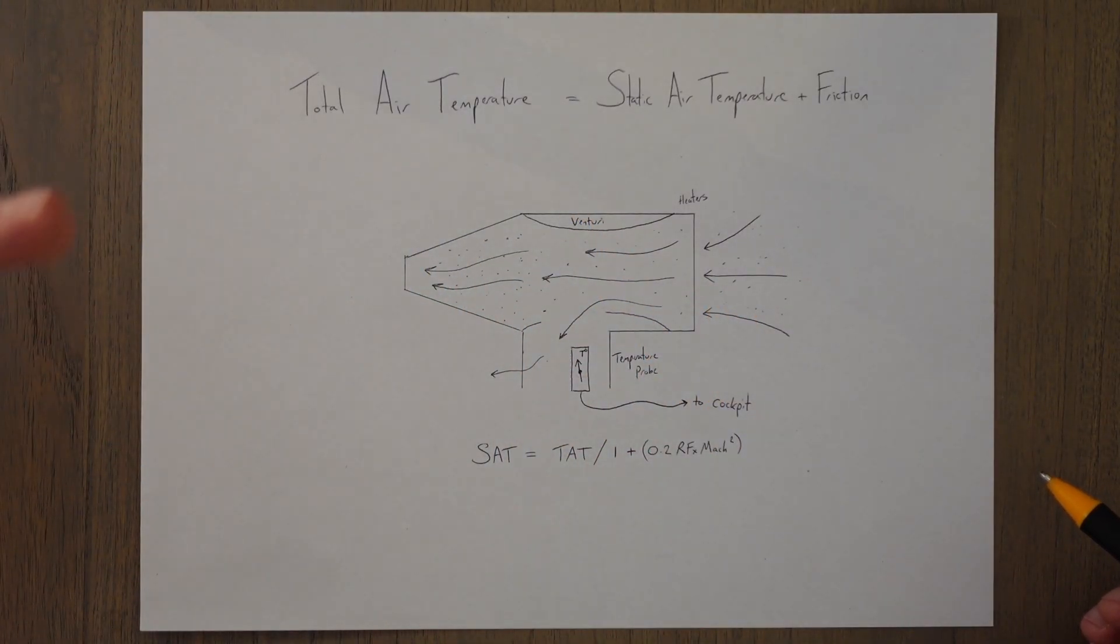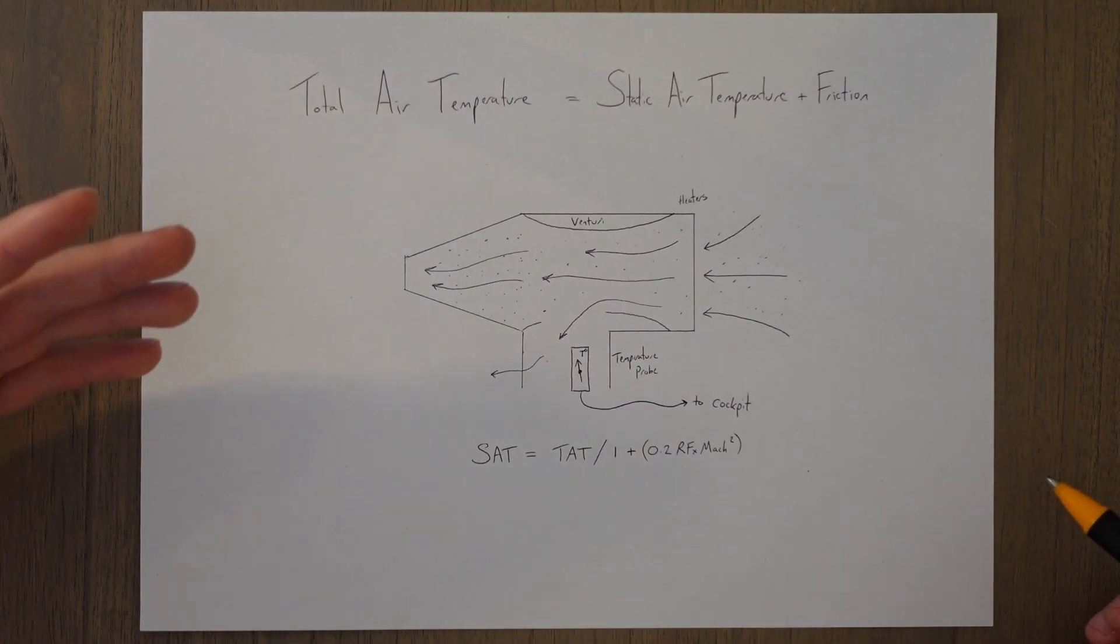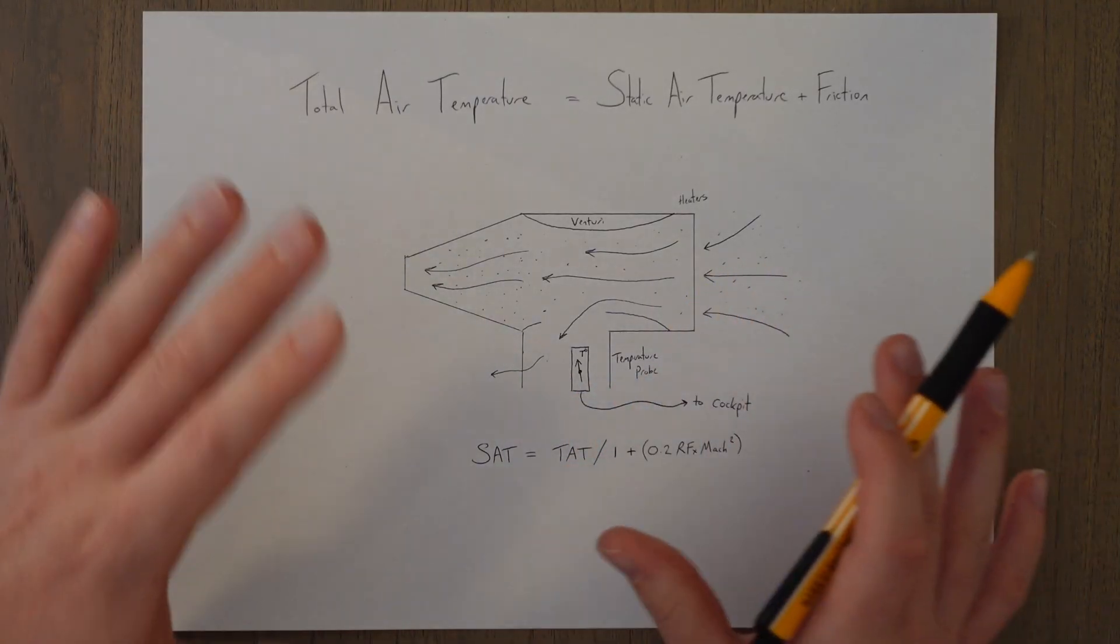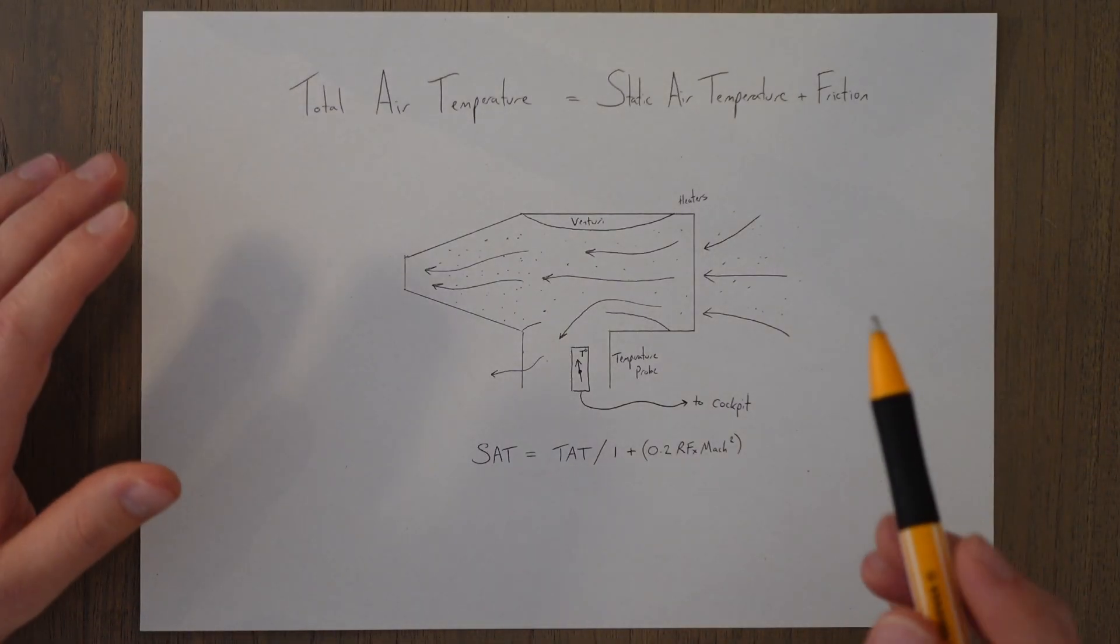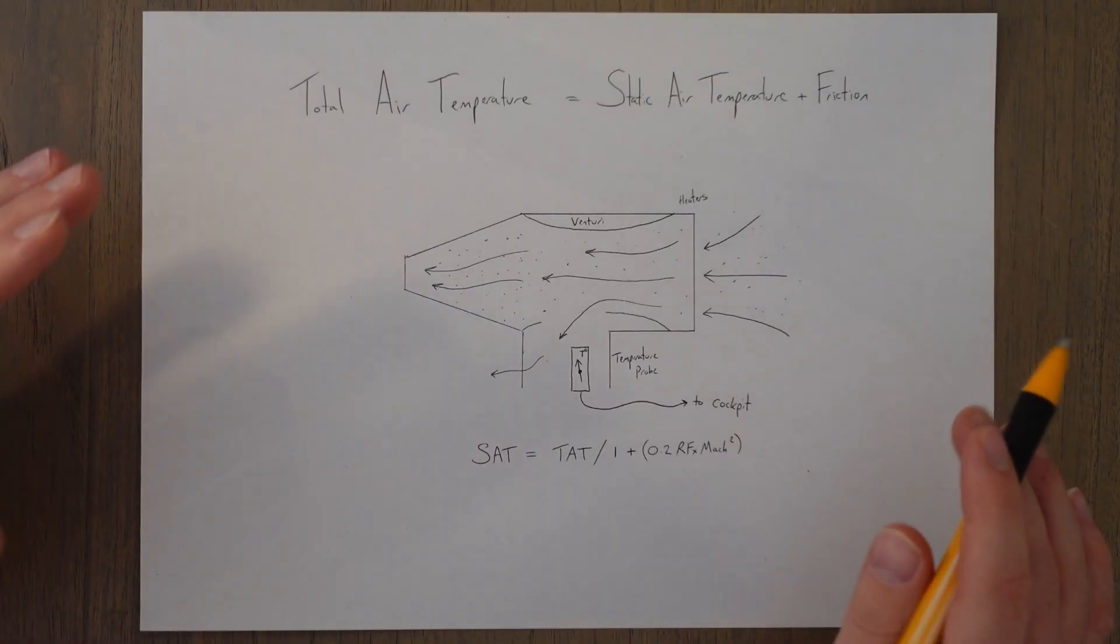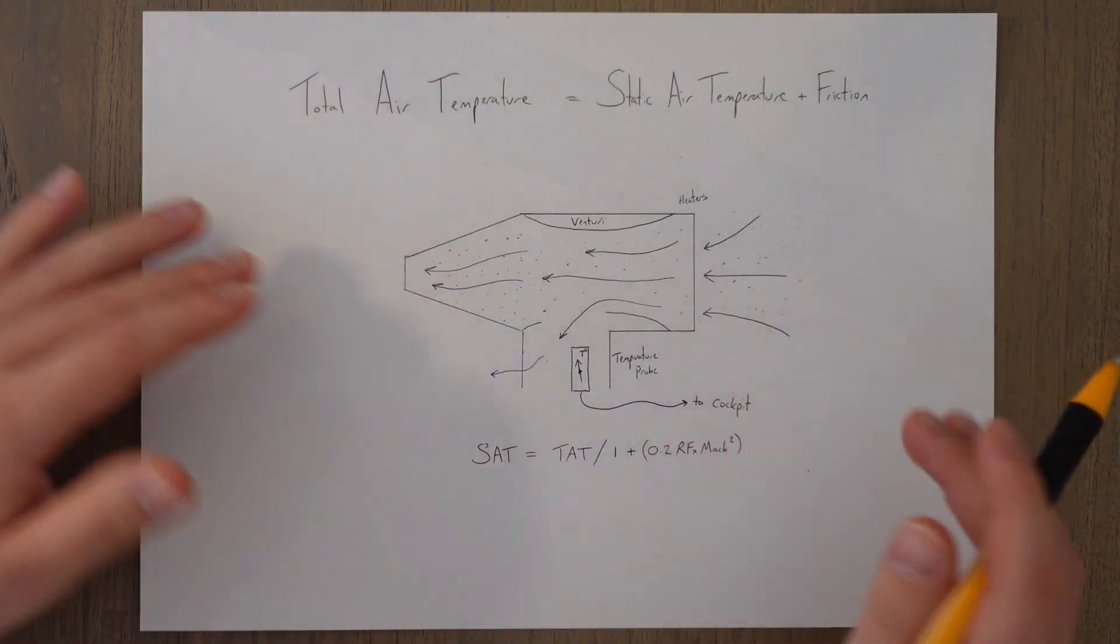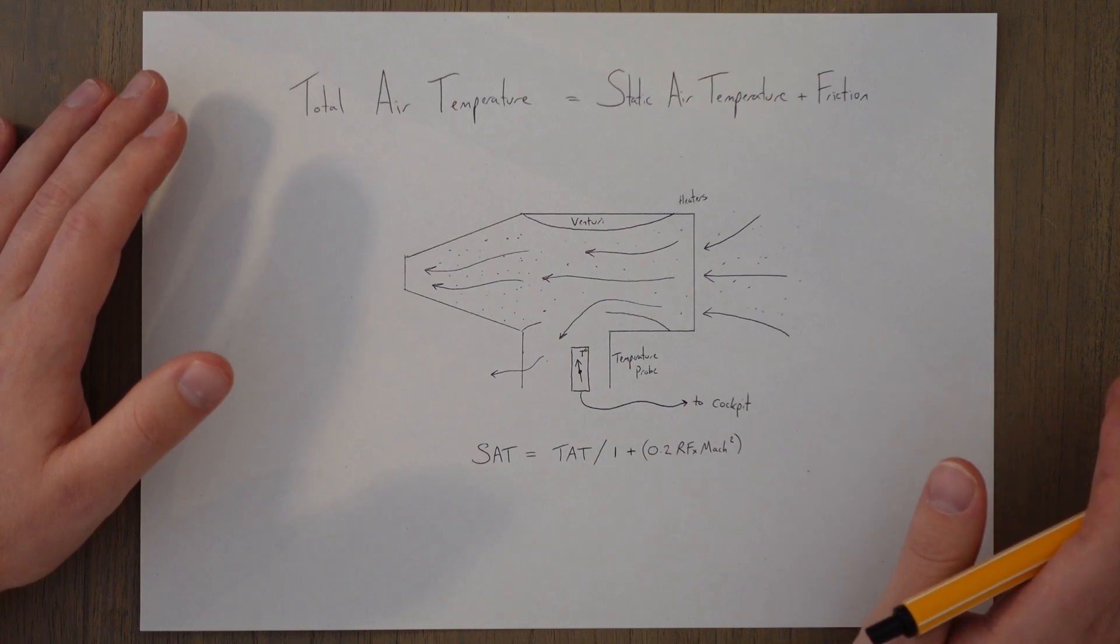So how do we solve this problem? Well, we use clever design. The most common type of probe and clever design that is used to get around this problem is called a Rosemount probe, which is, I'm pretty sure, a brand name, but this style, with a little variation, is all over the place on different aircraft.